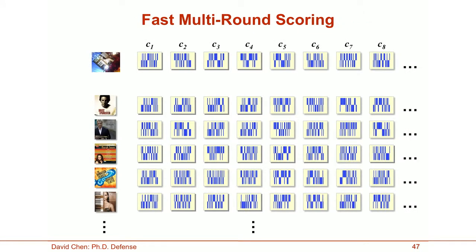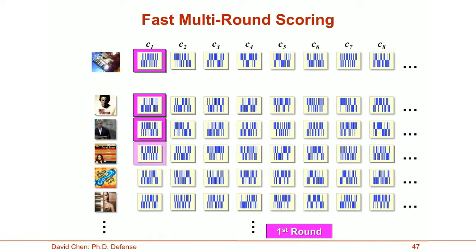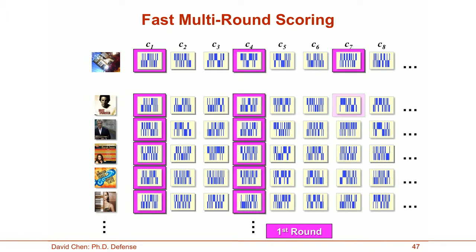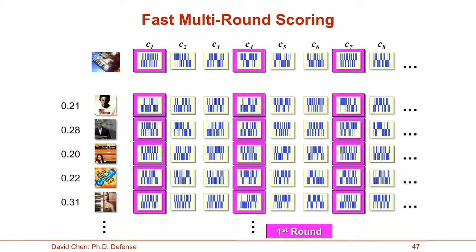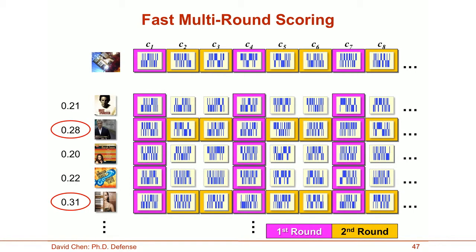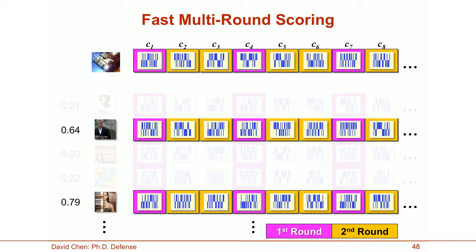To speed up the correlation computation, we can use a multi-round scoring approach. In the first round, we compute correlations for a subset of the codewords, resulting in a set of partial correlation scores. From this set, we identify the most promising database candidates for further exploration. In the second round, we finish computing correlations only for these most promising candidates. By carefully controlling the number of codewords visited in the first round and the number of images visited in the second round, we can get a several-fold speedup in computation without any loss in matching accuracy.